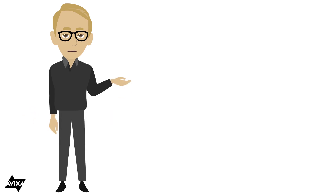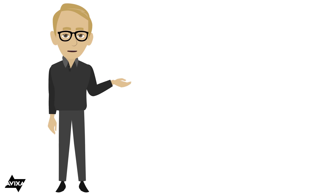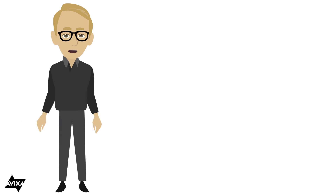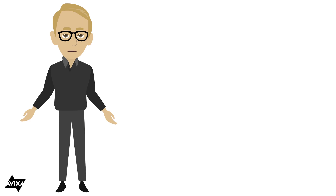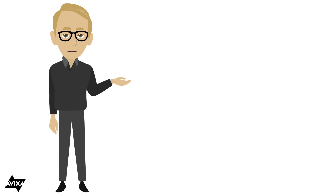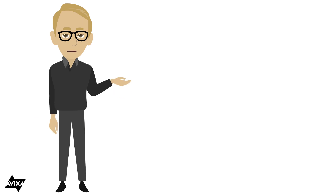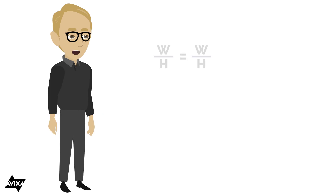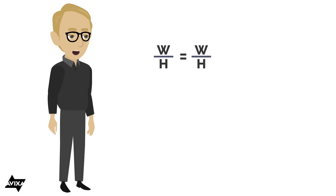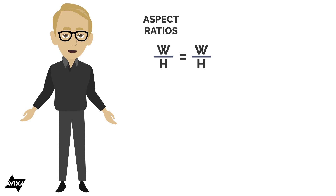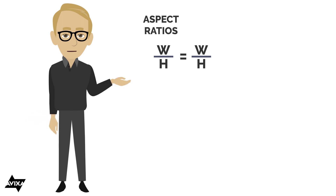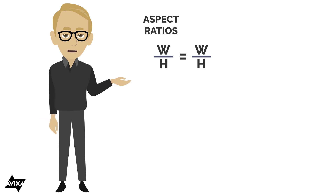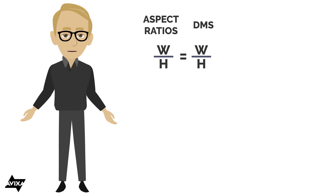Instead of using 1.78 to 1 or 1.33 to 1, we're going to do proportions and use cross-multiply and divide for our solutions. When we're doing proportions, we're going to set it up as width is to height as width is to height — using actual aspect ratios on one side and actual dimensions on the other.